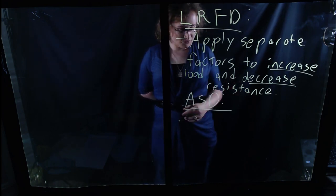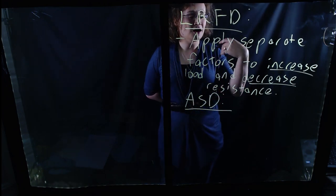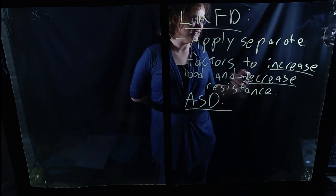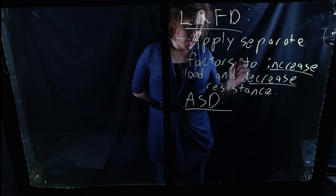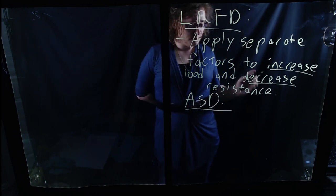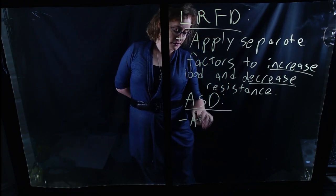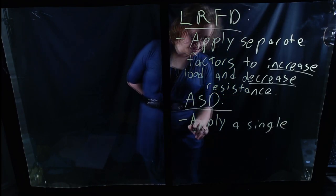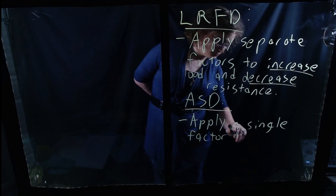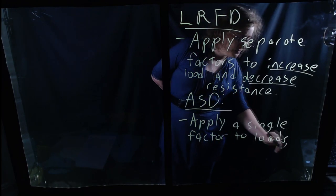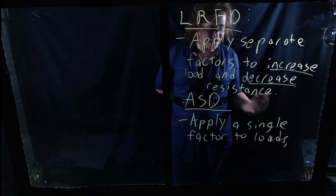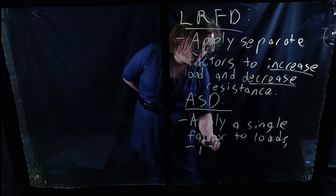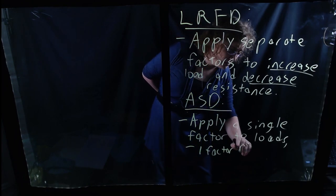ASD is the more traditional method — the older method prior to LRFD's adoption starting in the 70s and 80s and into the present more and more. ASD — allowable stress design — here you apply a single factor to all loads, and this essentially manages risk on both the load and the resistance side. One factor for both load and resistance. This will be important when we look at the ASD load combinations.